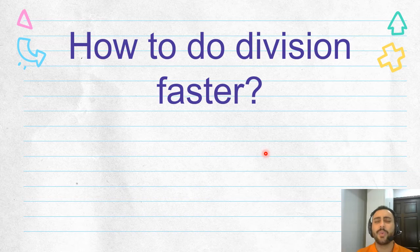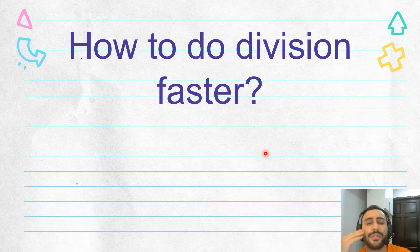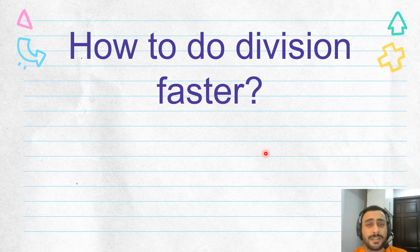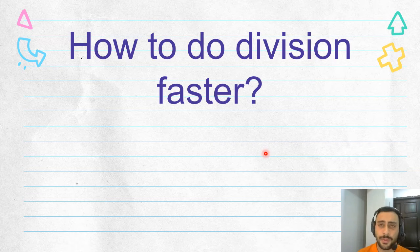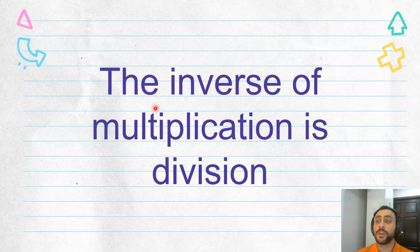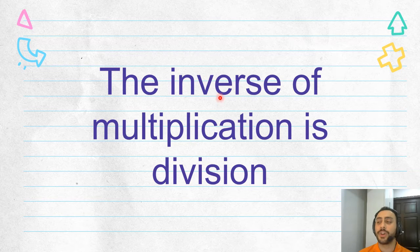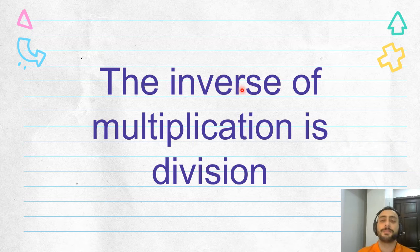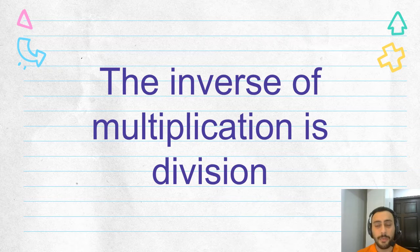Firstly, how to do division faster? Sometimes you forget how to do division, right? So for example, what is 63 divided by nine? It's a little confusing — so how to do it faster. I have a way for you. We can use inverse operations. The inverse of multiplication is division. Inverse means the opposite. And also the inverse of division is multiplication.